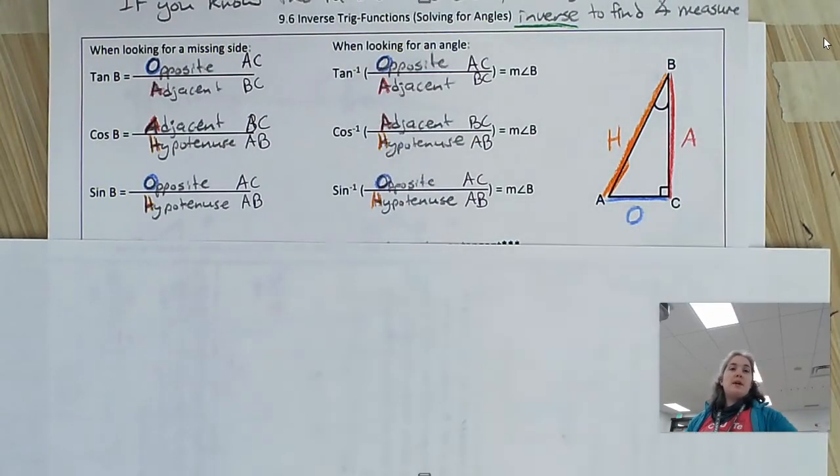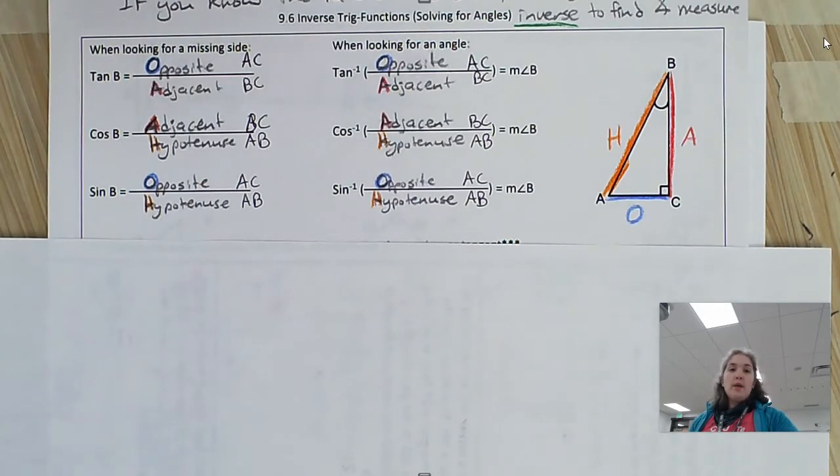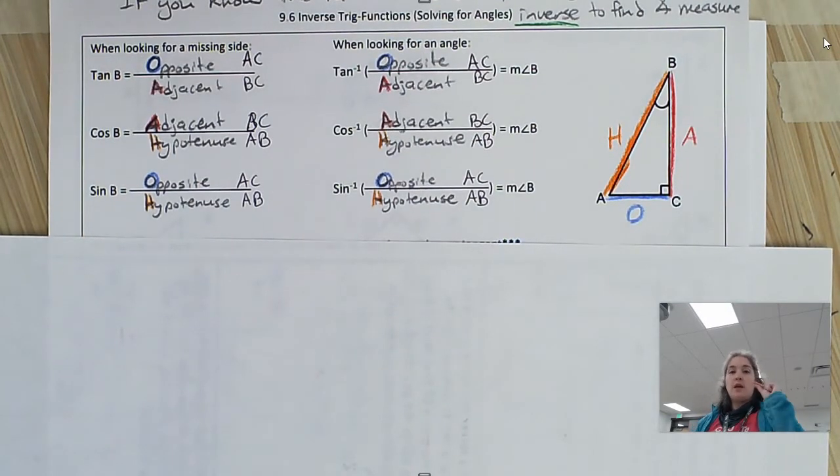Hello, geometry! So today we're talking about 9.6, which is inverse trig functions. We know that if we know the angle and one side, we can use trig functions to figure out the other side.